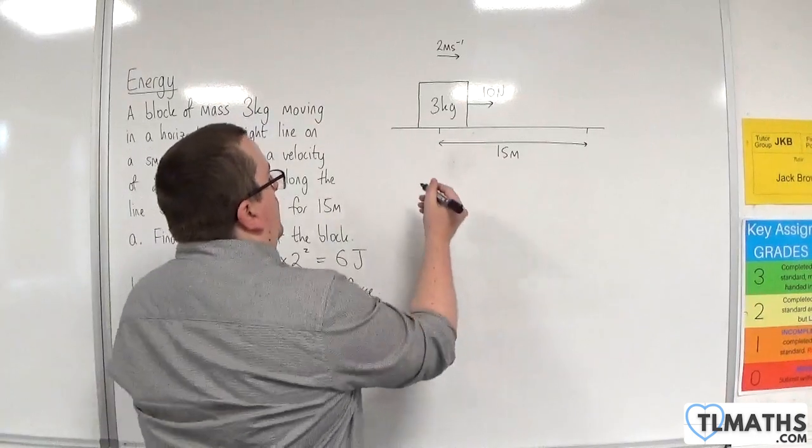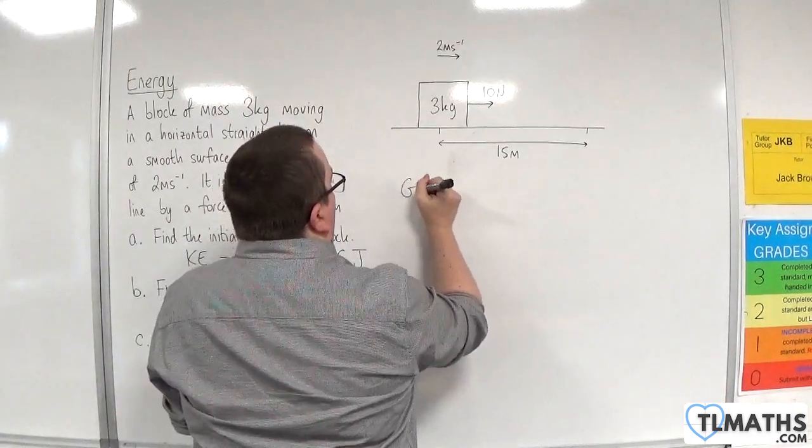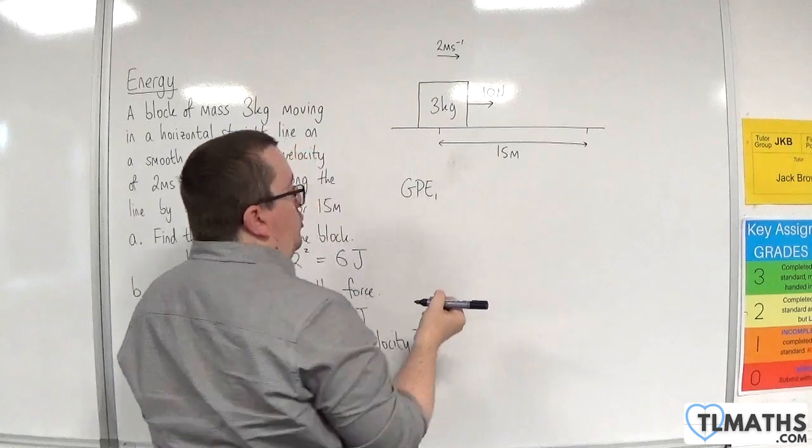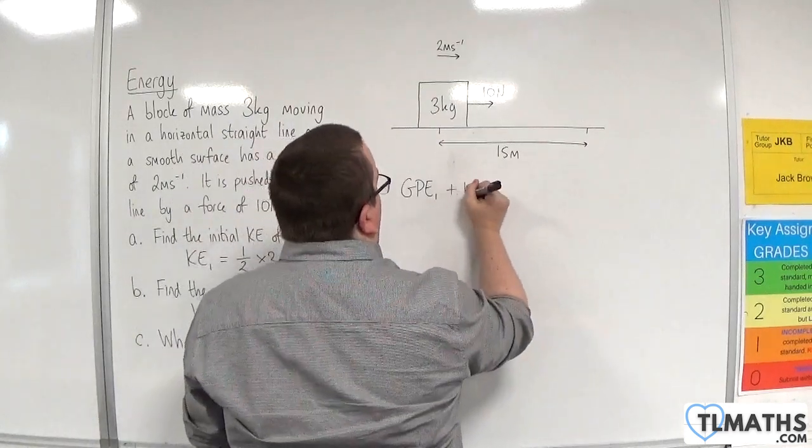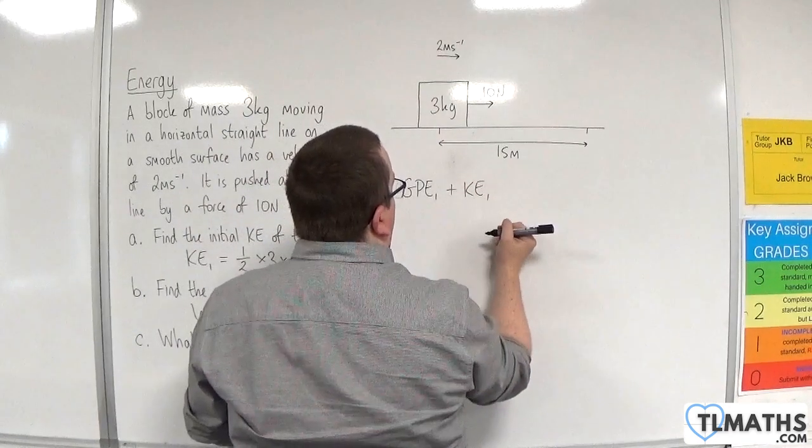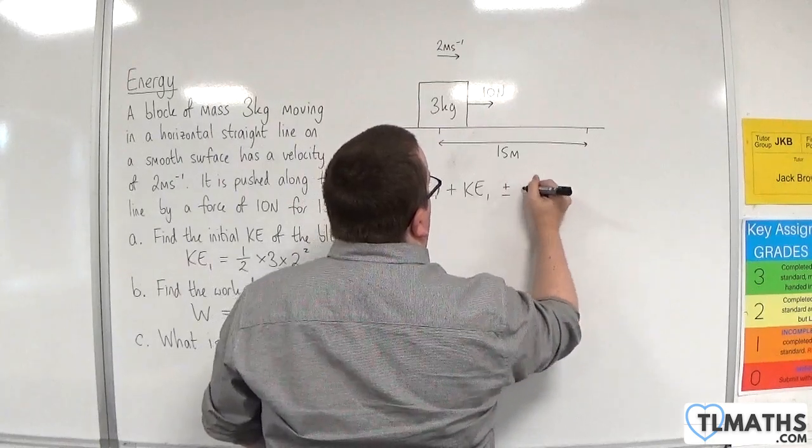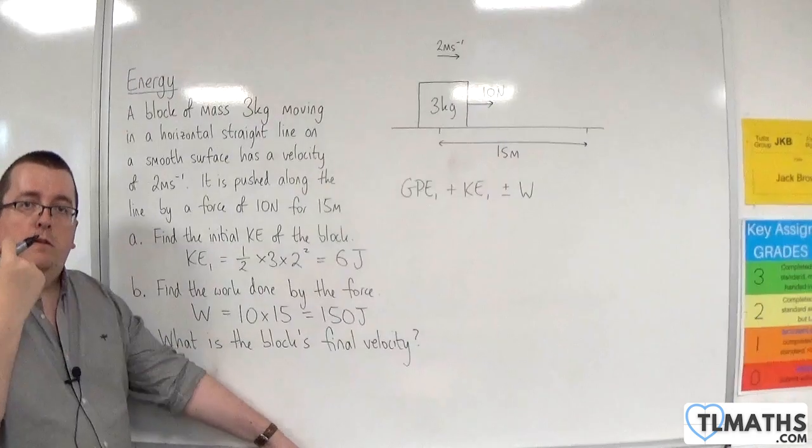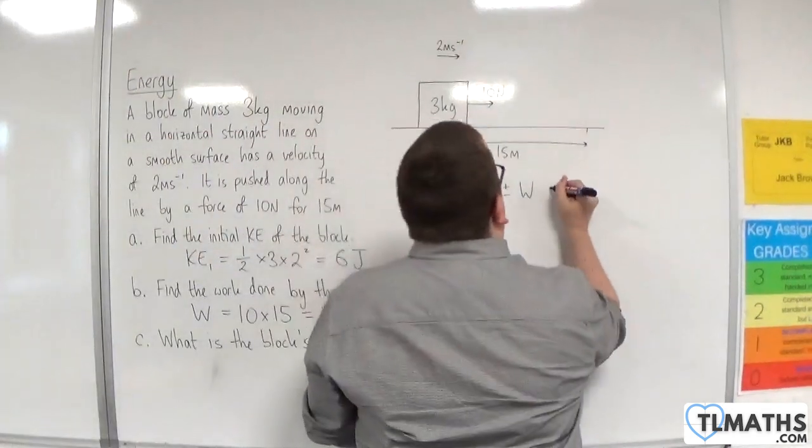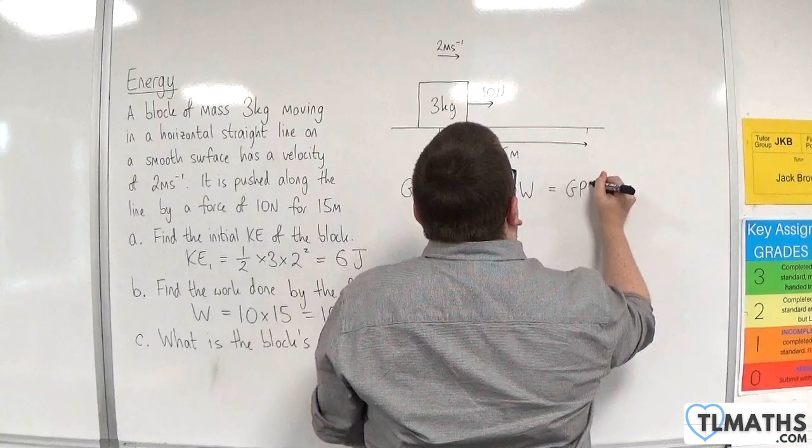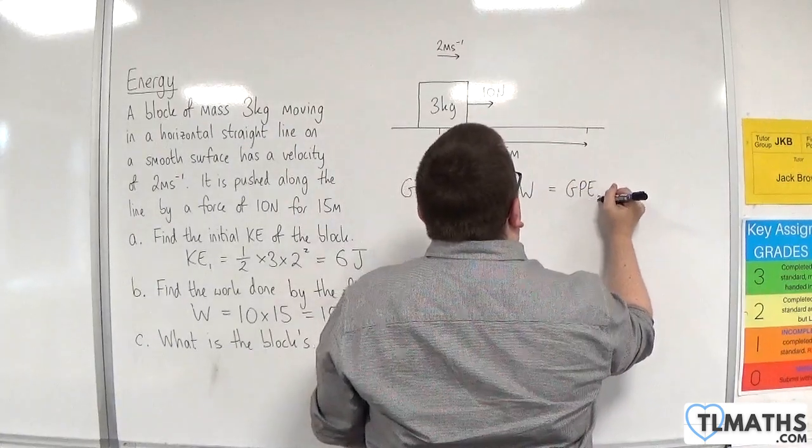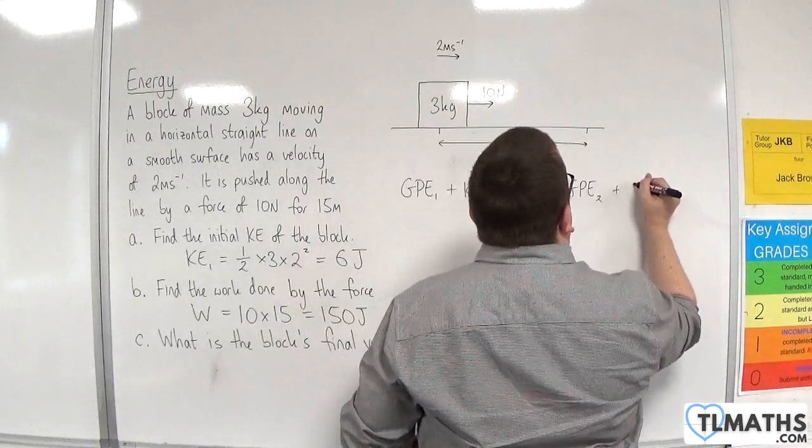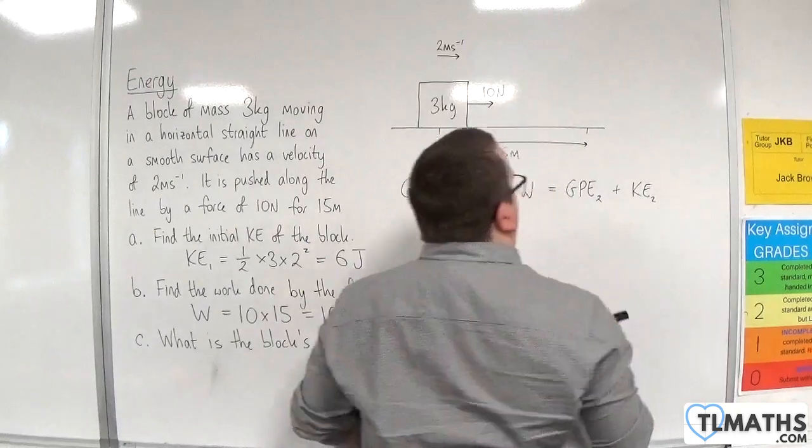So if we write it down, the work energy principle: we've got the initial gravitational potential energy plus the initial kinetic energy plus or minus the work done by forces is going to be equal to the gravitational potential energy final plus the final kinetic energy.